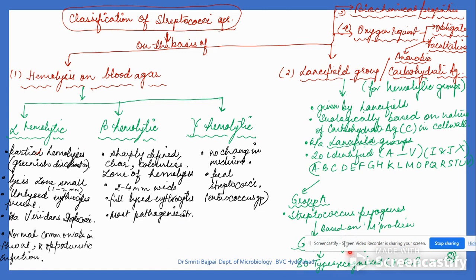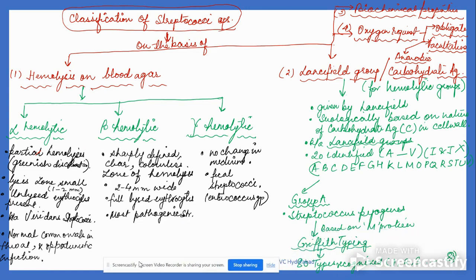Classification of Streptococci on the basis of hemolysis on blood agar: alpha hemolytic means partial hemolysis with green discoloration; the lysis zone is very small, one to two millimeters. Because of unlysed erythrocytes, the green color is present. They are also called viridans Streptococci, and include normal commensals in the throat and opportunistic infections.